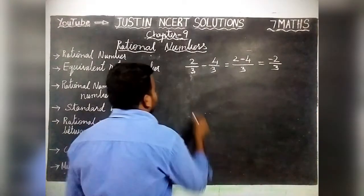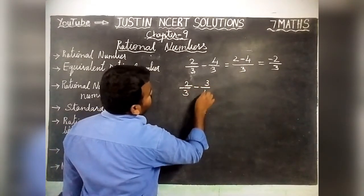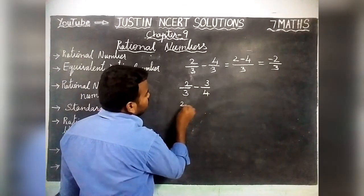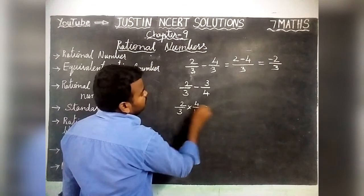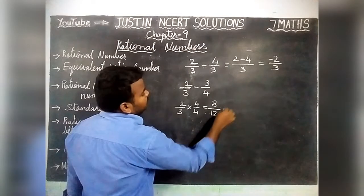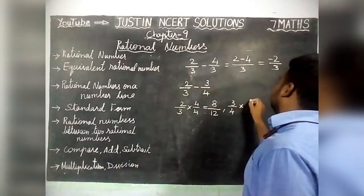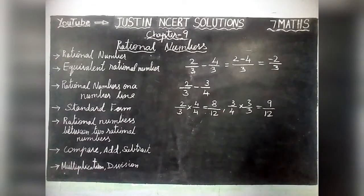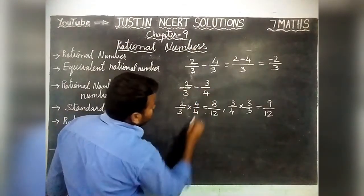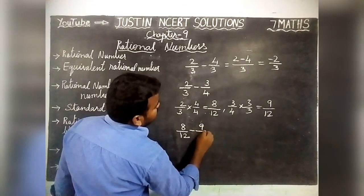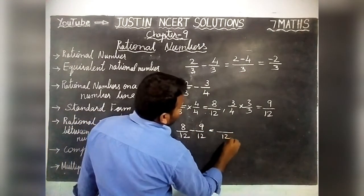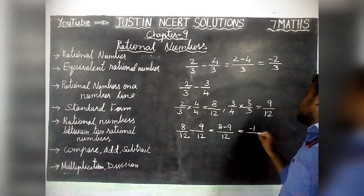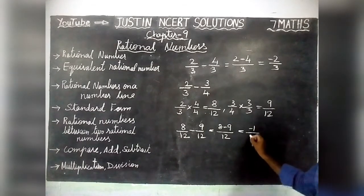If denominators are different — 2 by 3 minus 3 by 4 — we convert to common denominator. 2 by 3 multiplied by 4 by 4 gives 8 by 12, and 3 by 4 multiplied by 3 by 3 gives 9 by 12. Now common denominator is 12. So 8 by 12 minus 9 by 12: signs are different, difference is 1, the greatest number 9 has a minus sign. Answer is minus 1 by 12.